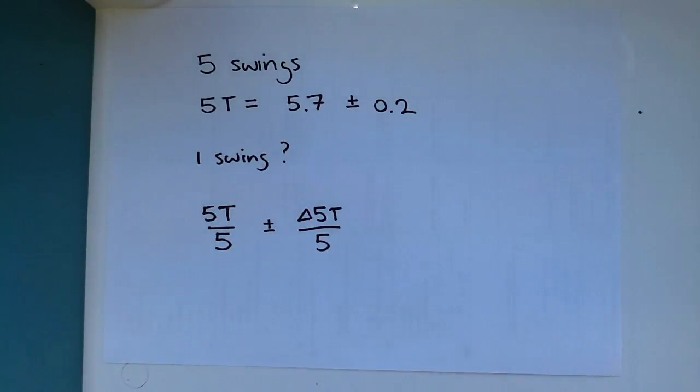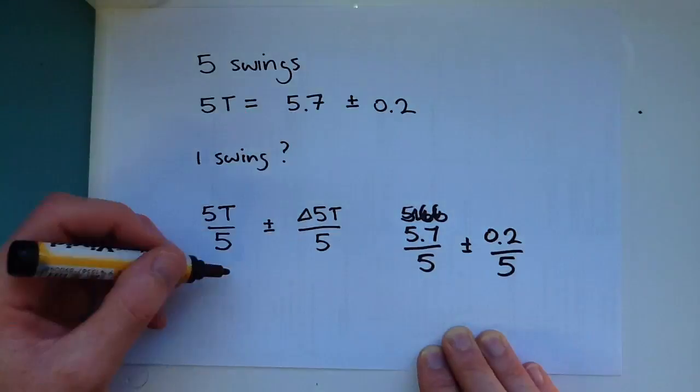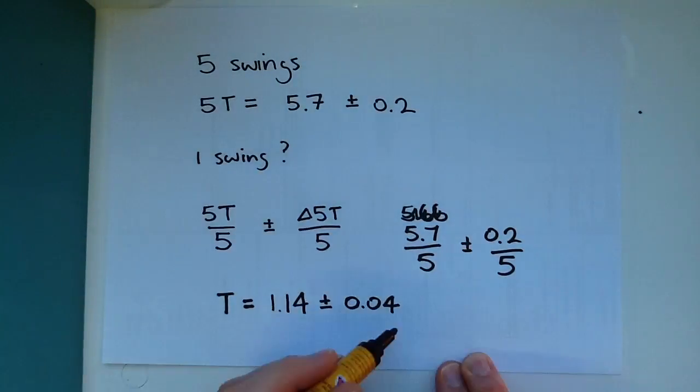So what is the time for one period? The 5 period time is divided by 5 to get the time of one period, and the uncertainty is also divided by 5. It maintains the same percentage uncertainty.